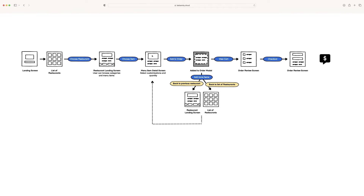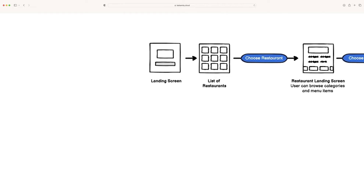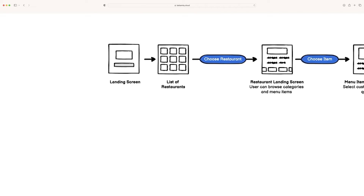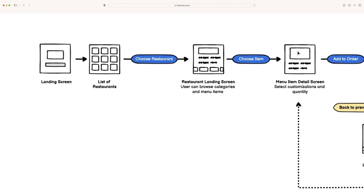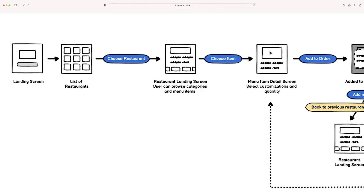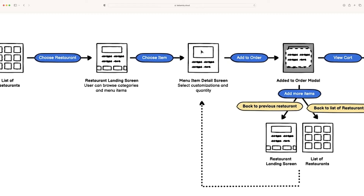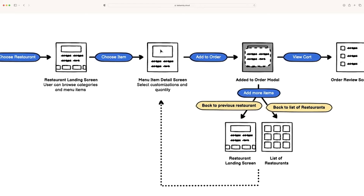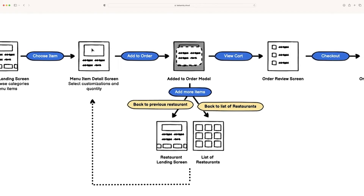I also worked on a user flow just to make sure I really understood what it's like and understood exactly all the screens I'm going to be designing for. So we have a landing screen, like I talked about, then the list of restaurants — you choose one. This is what a restaurant would look like: a landing page with the menu on it. I'm assuming it would just be one full page so that you could scroll through and easily order. Then a menu item detail screen, a modal once you've added that item, and then the ability to either go back to that same restaurant or order from a different restaurant.